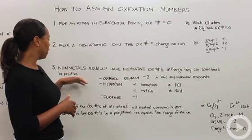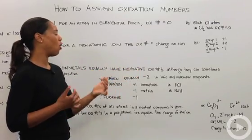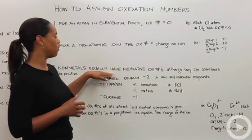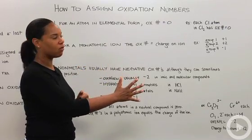Our third rule is that nonmetals usually have negative oxidation numbers, although they can sometimes be positive. Overwhelmingly, they're going to have negative oxidation numbers. Remember, your nonmetals are over to the right-hand side of the periodic table.